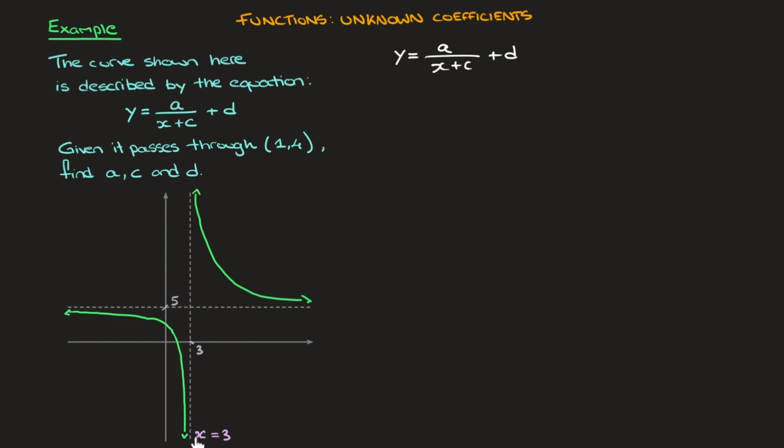vertical asymptotes arise at values of x at which denominators equal 0. And so the fact that this vertical asymptote has equation x equals 3 tells us that if we replace x by 3, then this denominator would equal 0. So to find c, we replace x by 3 and equate this denominator to 0. Here's what I mean. We can state that c must be such that 3 plus c equals 0. And quickly solving this by subtracting 3 from each side leads us to c equals negative 3. Done.